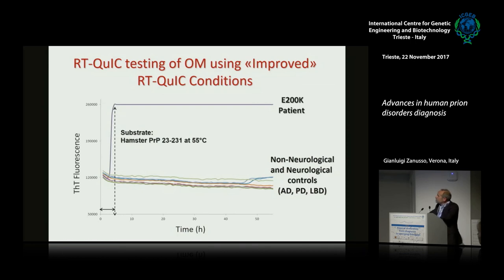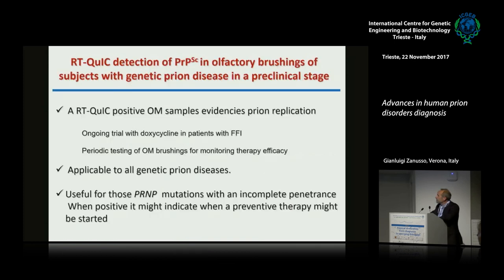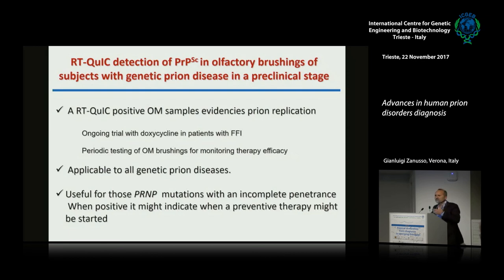We showed that RT-QUIC and PMCA are positive in the olfactory mucosa in patients with FFI, and that the olfactory mucosa has higher seeding activity compared to CSF — making it an appropriate candidate for preclinical study. By improving the conditions in olfactory mucosa — changing the substrate and temperature — after five hours we have a positivity in our sample with no false positives. RT-QUIC is positive in OM samples, providing evidence of prion replication. This is the rationale used for the FFI study and is applicable to genetic forms, particularly appropriate for mutations which are not 100% penetrant.